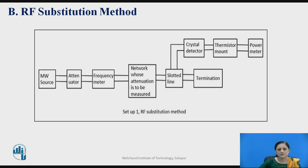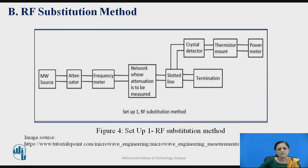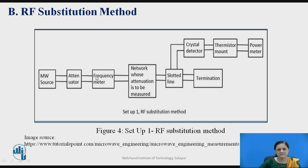This drawback of the power ratio method can be eliminated using the RF substitution method. In RF substitution method Setup 1, the same block diagram is used: microwave source connected to the attenuator, then to the frequency meter, then to the network whose attenuation is to be measured, and then to the slotted line section. The power meter reading from this setup is noted as P.